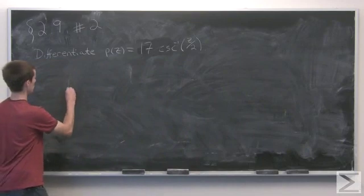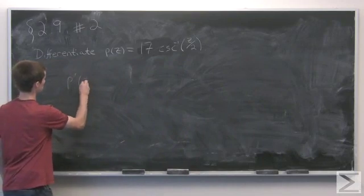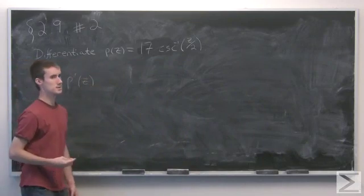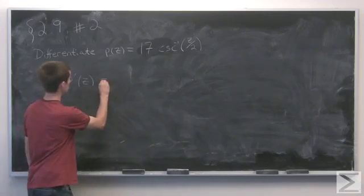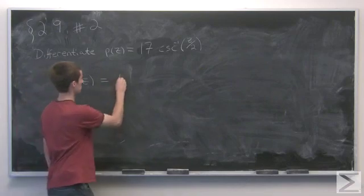So first thing we'll do is take the derivative, treating the argument of inverse cosecant as a single variable. So p prime of z, we pull the 17 out.